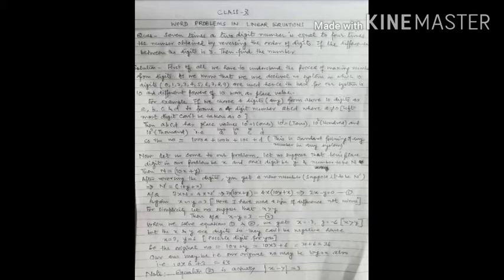Dear students, yesterday I gave you some problems from linear equations and I am going to take two problems from those. Question number one is that seven times a two-digit number is equal to four times the number obtained by reversing the order of the digits, and if the difference between the digits is three, then find the number.